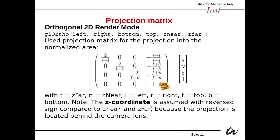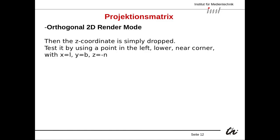Often the z coordinate is assumed with reverse sign compared to z near and z far, because the projection is assumed to be located behind the camera lens — this can be tricky, so if you get a strange result, try changing the sign of the z coordinate. The z coordinate is then simply dropped in the next step. We can test this using a point in the left lower near corner with x equals L, y equals B for bottom, and z equals minus N for near — note the sign change.